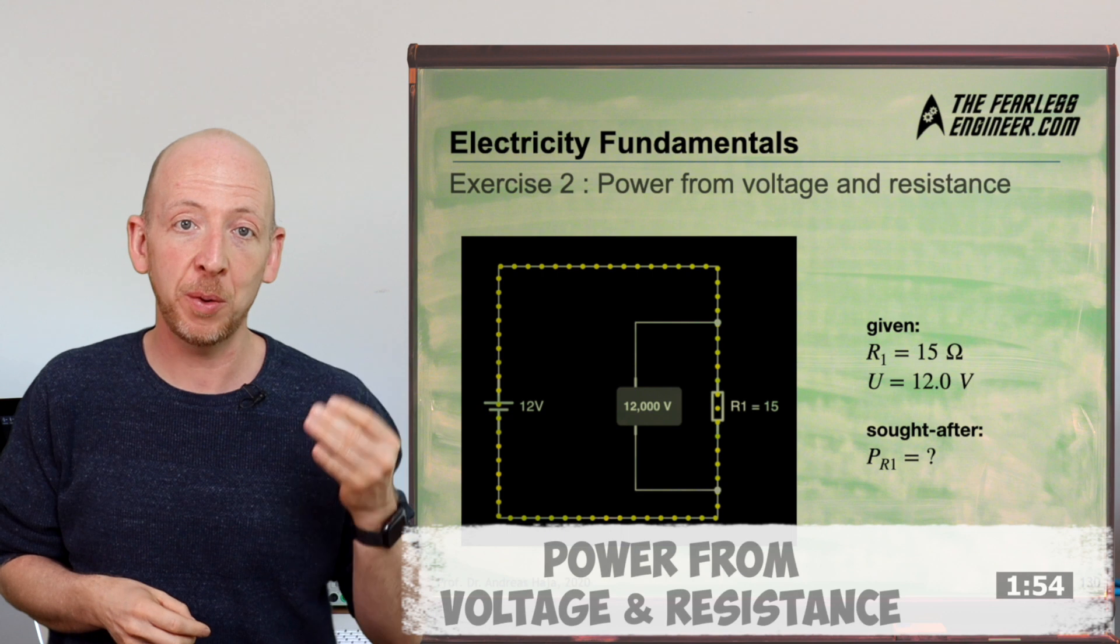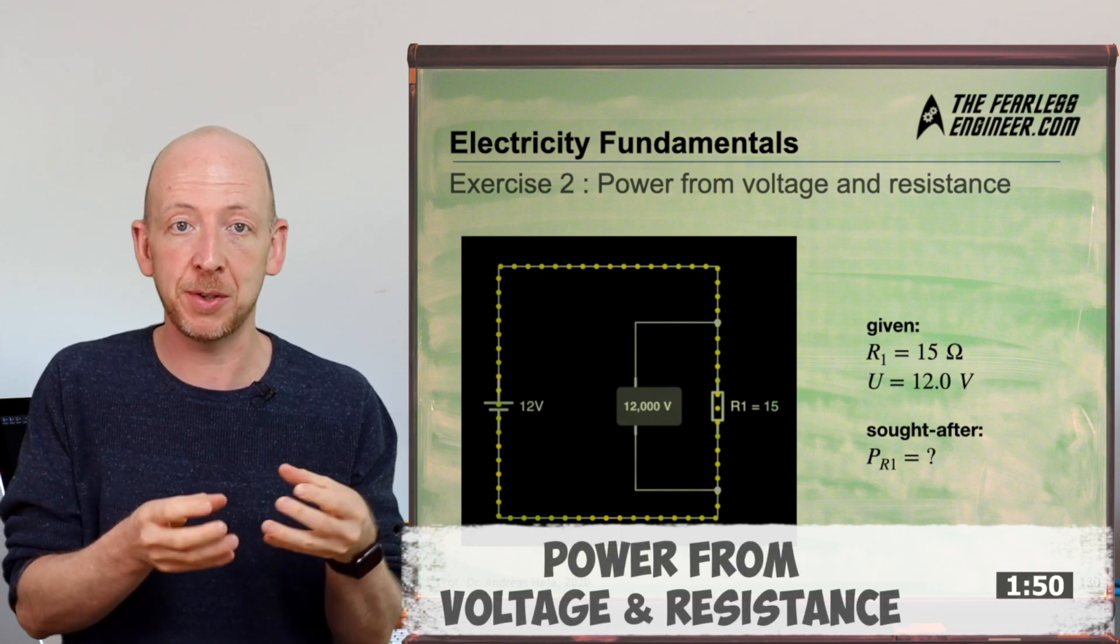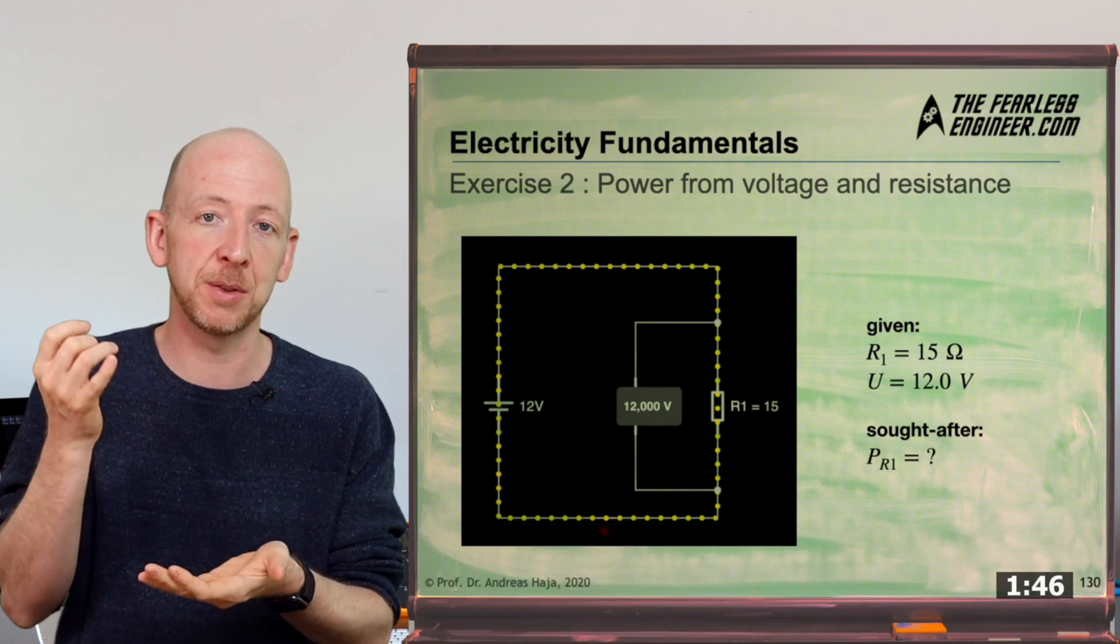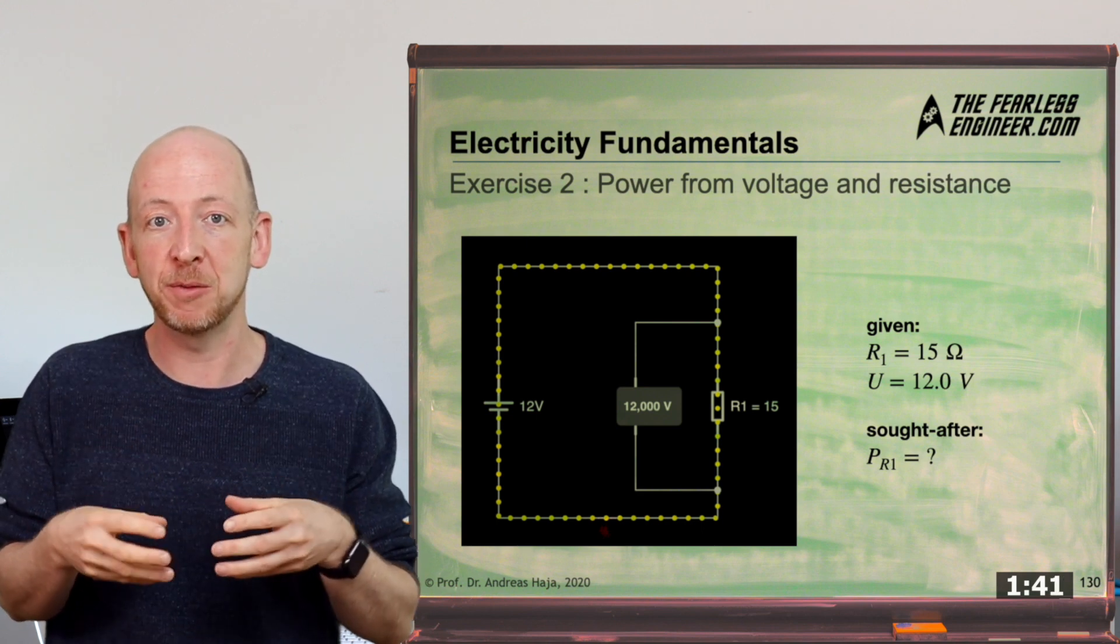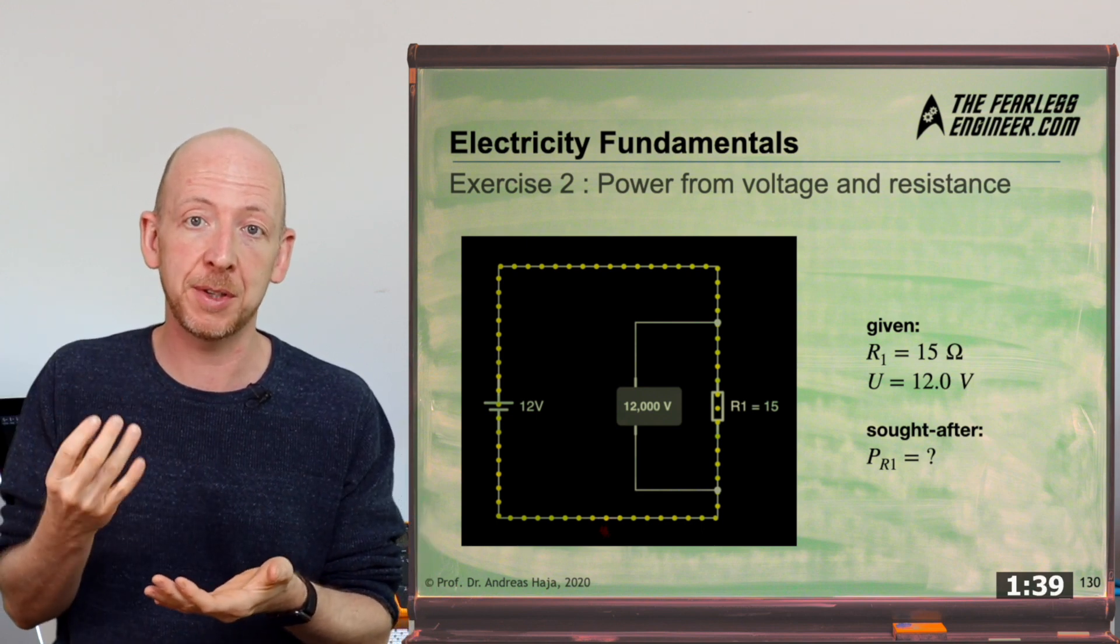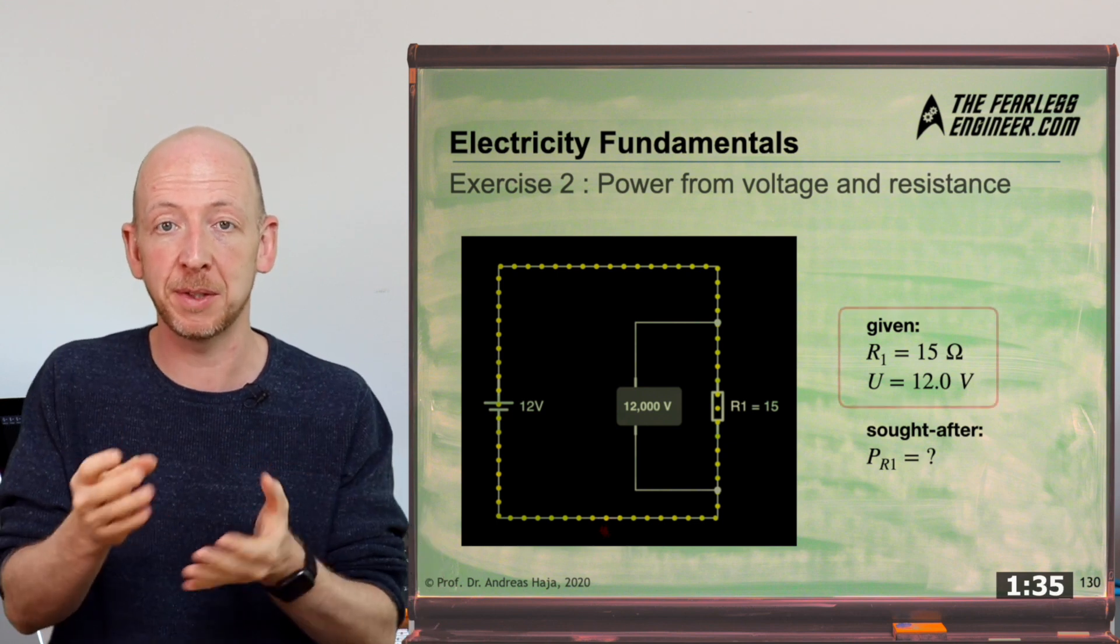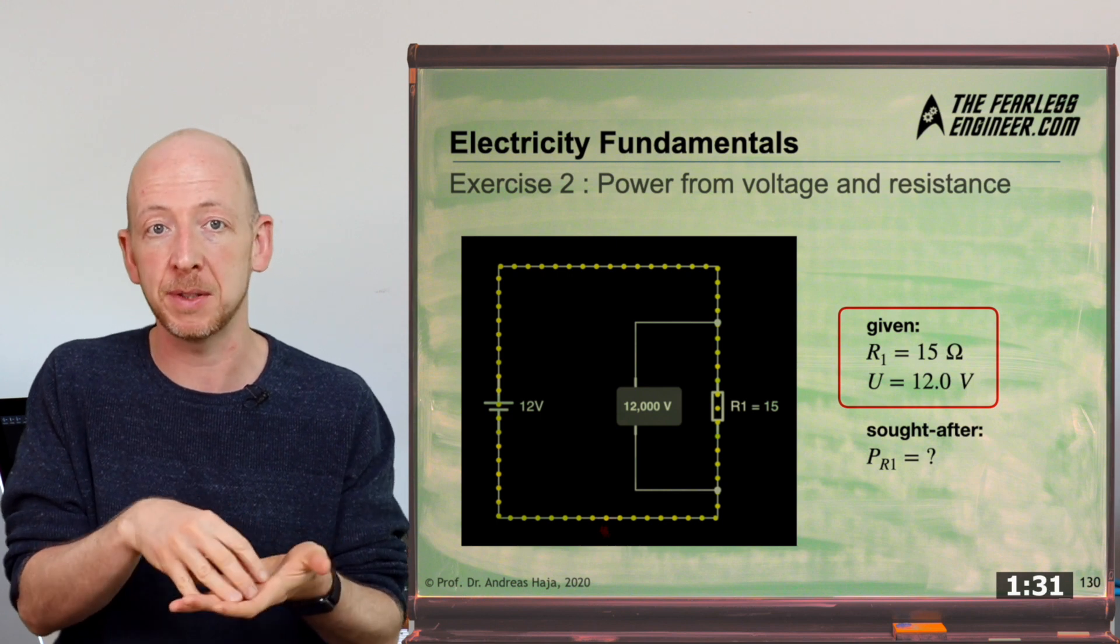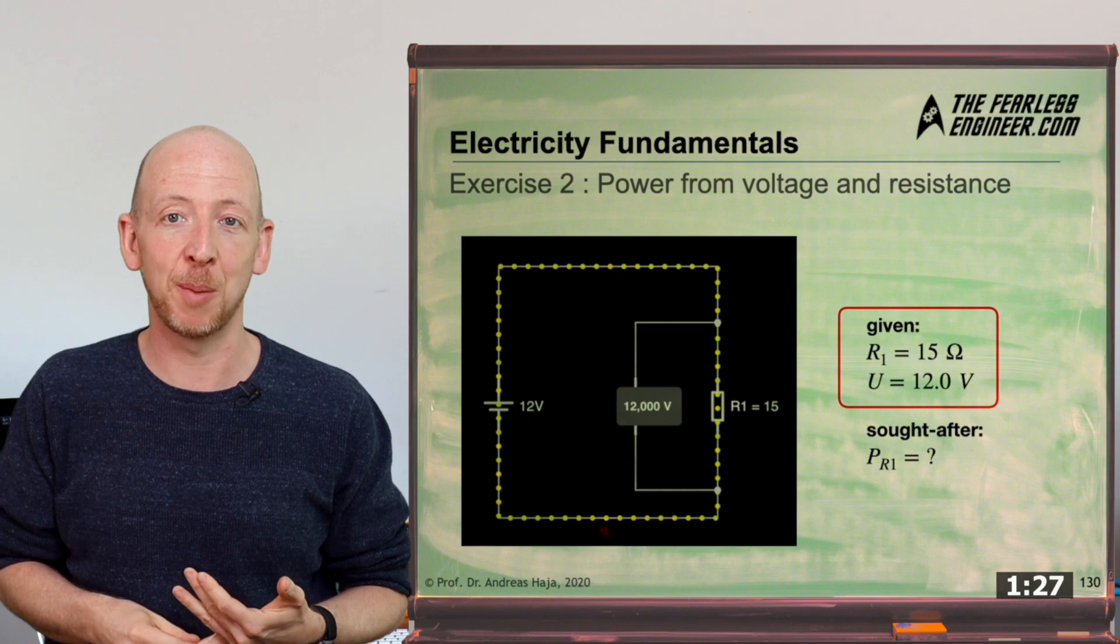In the second task we measure only the voltage across the resistor, thereby avoiding this problem of the potentially distorted current from the last example. In order for this to work however, we need to know the value of the resistor with sufficient accuracy and we must also assume that it remains constant across all voltages and currents. The numerical values for the task are 12 volts for the voltage and 15 ohms for the resistor. Now is the time to pause again so you can work out the problem yourself.